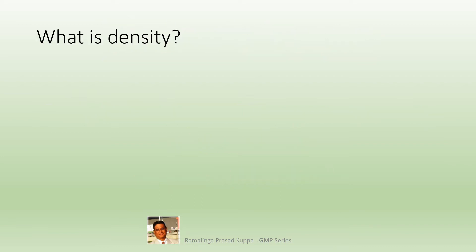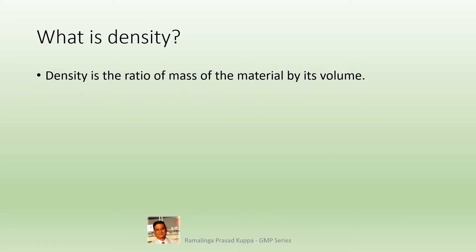What is density? Density is the ratio of mass of the material by its volume — the weight of material divided by the volume that the same weight of material occupies. This is reported as weight per ml. The density is also referred to as weight per ml; both are the same.